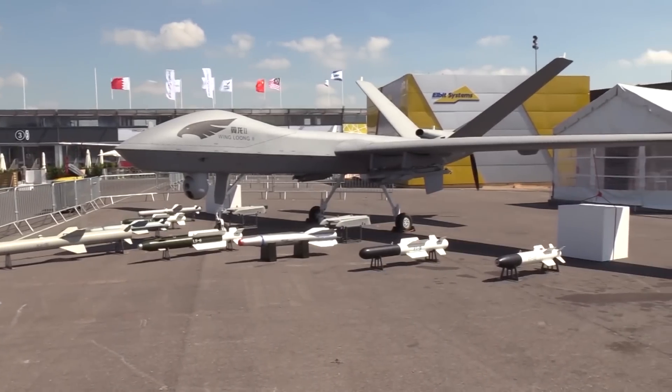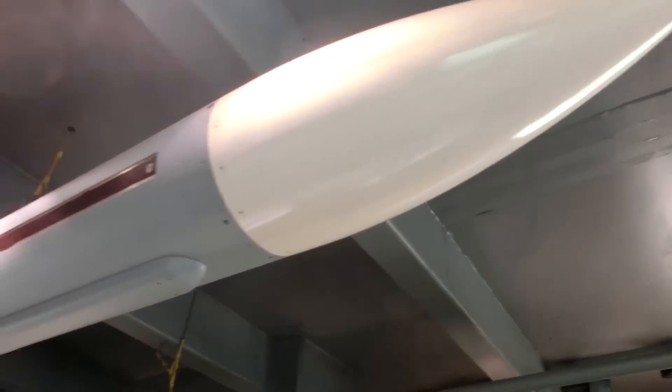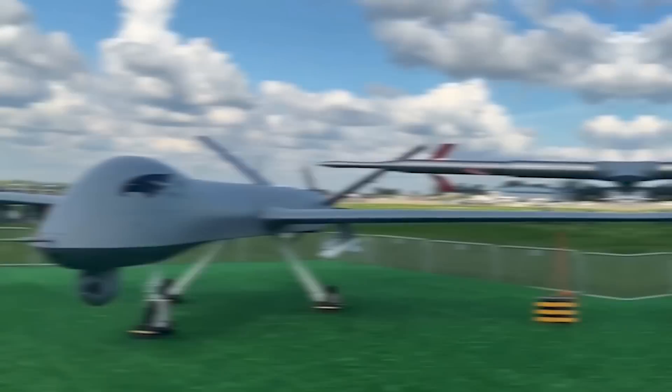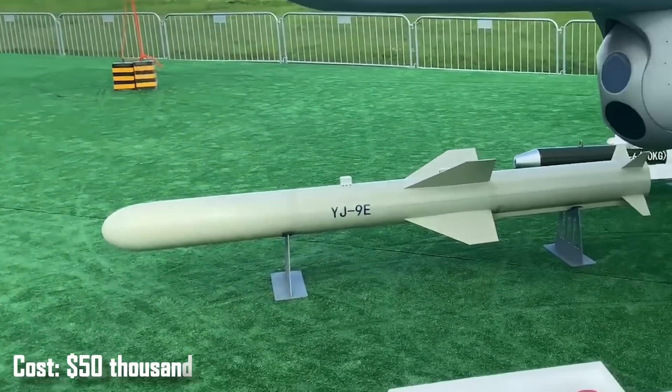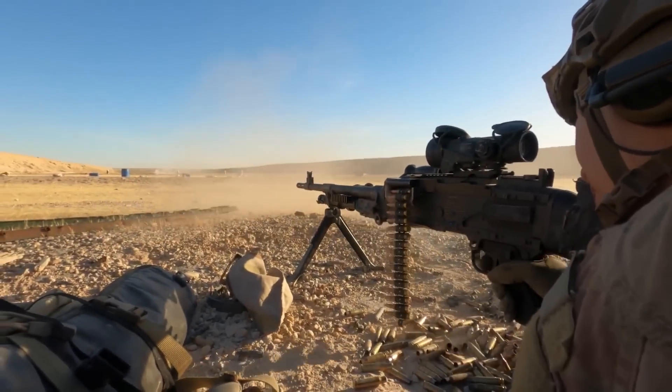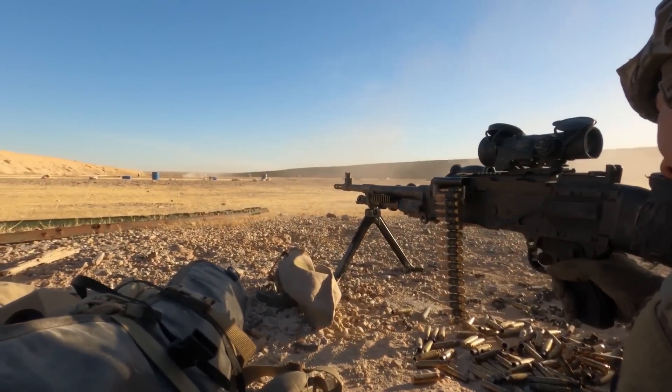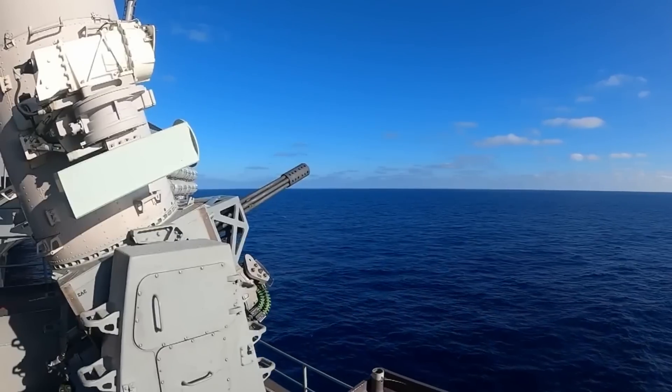Moreover, the cost of a kamikaze drone is low compared to other types of weapons. For example, the average cruise missile of the latest generation is priced at five million dollars per unit, while the price of a kamikaze drone barely reaches fifty thousand dollars. So what should the United States use to shoot down such weapons?